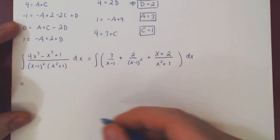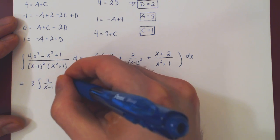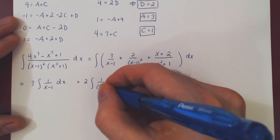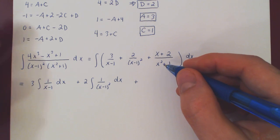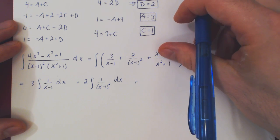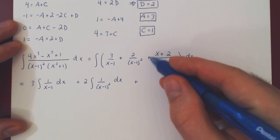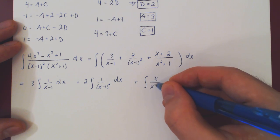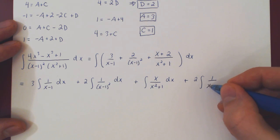We split into 4 integrals. First: 3 times the integral of 1 over x minus 1 dx. Plus 2 times the integral of 1 over x minus 1 squared dx. The third partial fraction, x plus 2 over x squared plus 1, cannot be integrated as a single fraction — the only way is to break it into a sum of two fractions: x over x squared plus 1, plus 2 over x squared plus 1. So we get the integral of x over x squared plus 1 dx, plus 2 times the integral of 1 over x squared plus 1 dx.